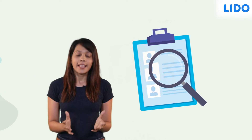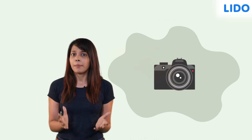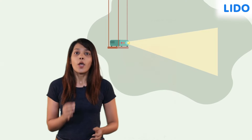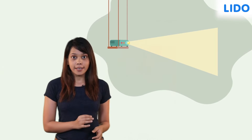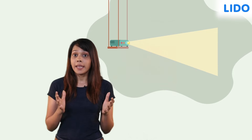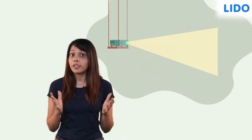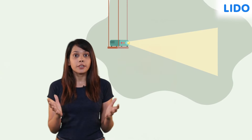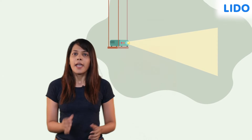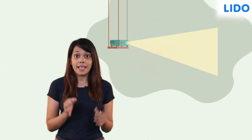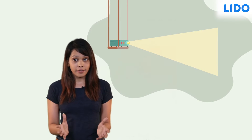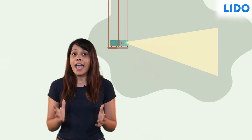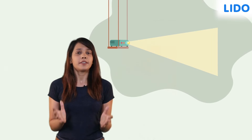Mirrors, lenses, telescopes, cameras, projectors — all these devices make images of the objects in front of them. But the images have different characteristics and are therefore given different adjectives.